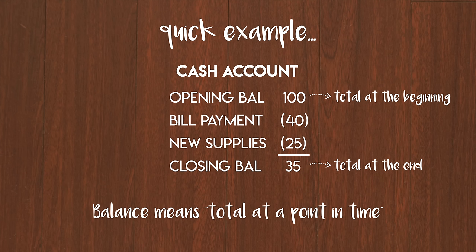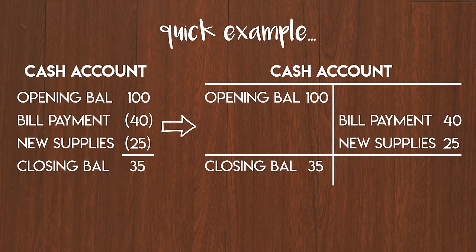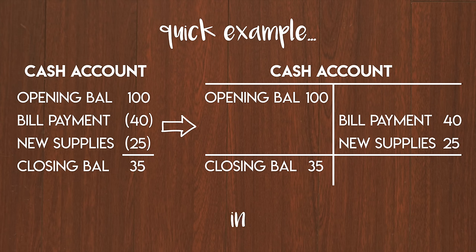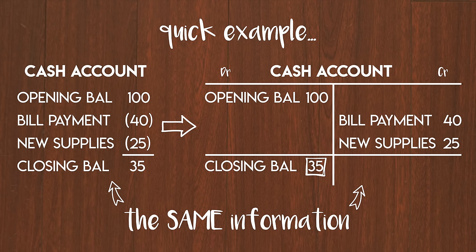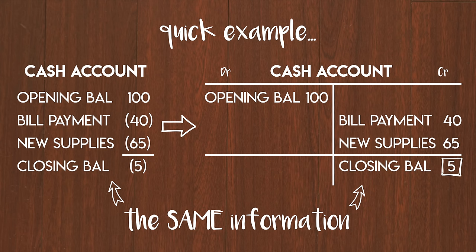Typically when you are doing a calculation you might choose to lay it out as we have done here. However when you are using T-accounts you would show it like this. Cash is an asset — that's the A in DEALER — so debits increase it and credits decrease it. Debits are on the left and credits are on the right. The final balance is still $35; it is a different way to present the exact same information. The benefit is that it is easy to distinguish between all of the different debits and credits. In this case your closing balance goes on the left-hand side because it is bigger than zero. However if your supplies had instead cost $65 you would be left with negative cash, or an overdraft of $5, so your closing balance would go on the right-hand side instead.